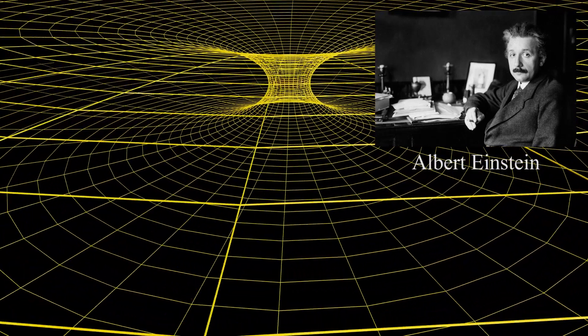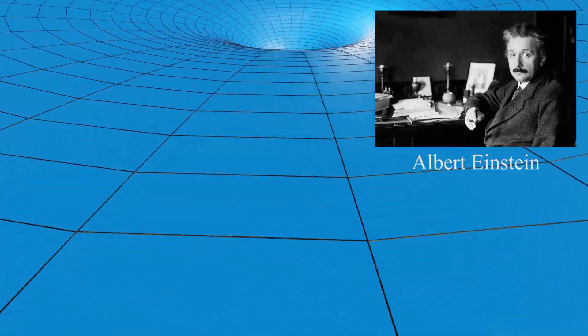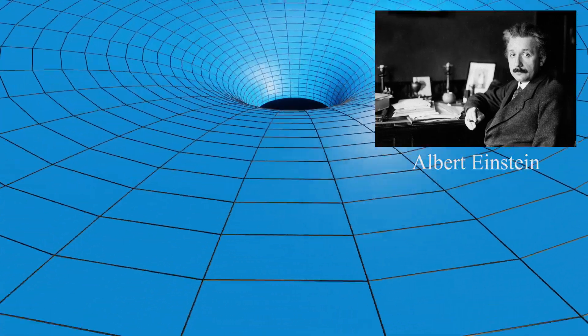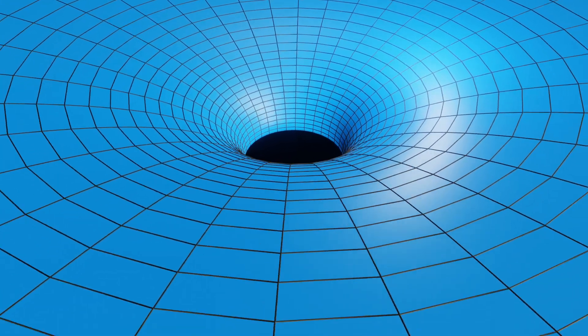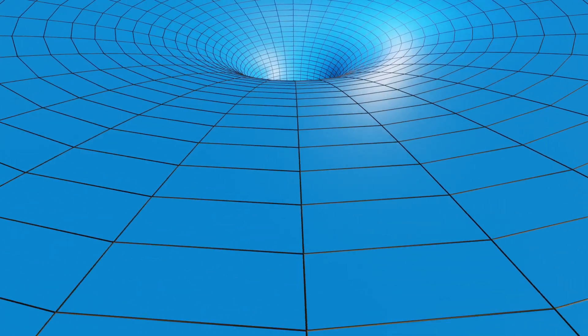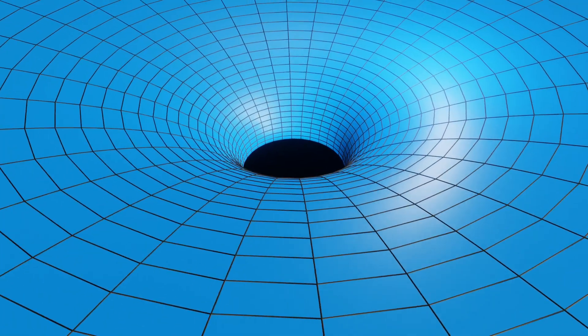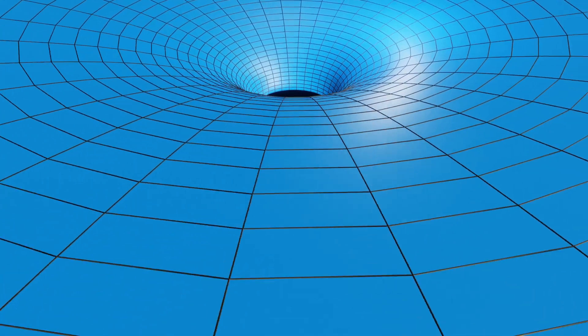Einstein's theory accounts for gravity as space-time curvature. According to the theory, massive objects curve the space-time in their vicinity, and then other objects, including light beams, travel along the shortest path through this curved space-time.